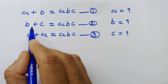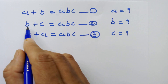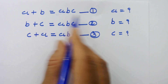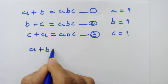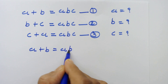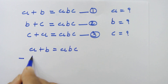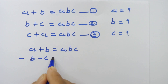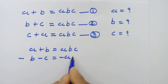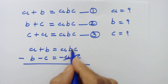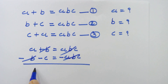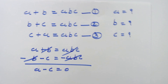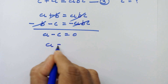Our first step is to subtract equation number 2 from equation number 1. So, A plus B equals A times B times C, minus B minus C equals minus A times B times C. These two will be cancelled and these two will also be cancelled. So we have A minus C equals 0, which means A is equal to C.